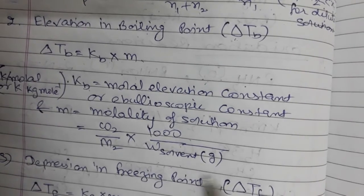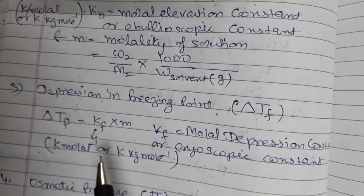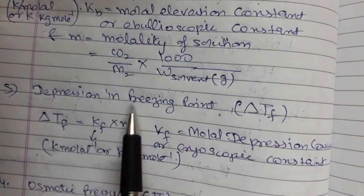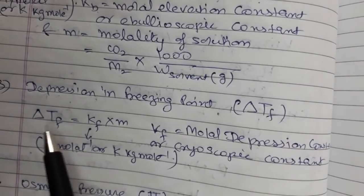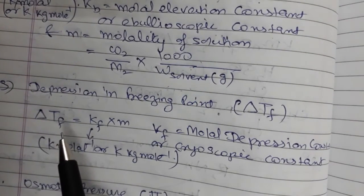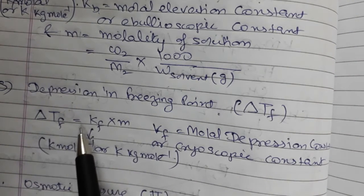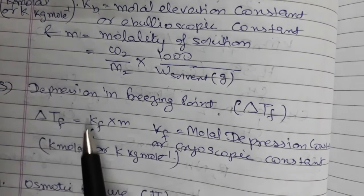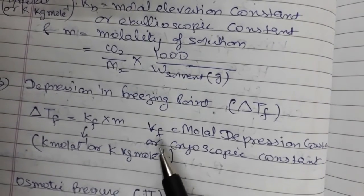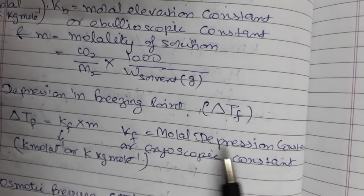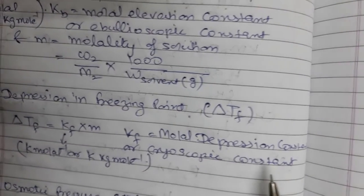The third colligative property is depression in freezing point, denoted by delta Tf. As shown in the video links provided, delta Tf can be shown to be equal to Kf into m, where Kf is the molal depression constant.